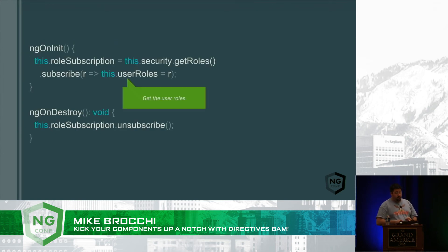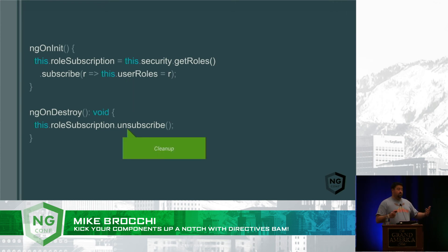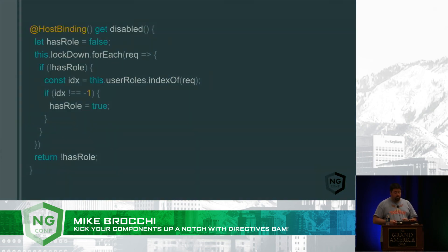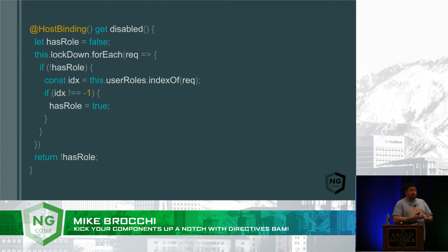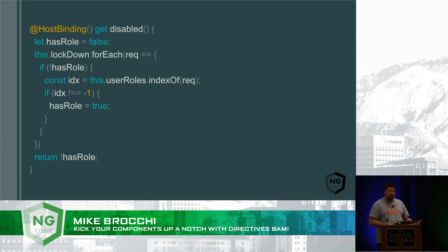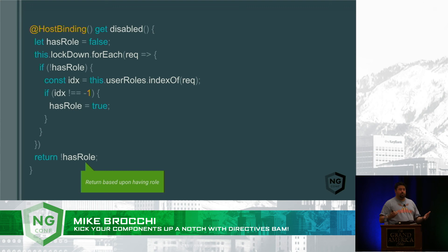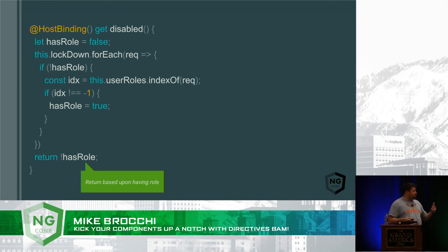I'm keeping track of a subscription to an observable and an input to pass values into it. You'll notice the selector and the input are both named lockdown — that is completely legal. You can pass values in based off of the selector that activates your directive, especially for attributes. And I'm injecting my security service via dependency injection. Inside the directive we have lifecycle hooks: on init I subscribe to get the roles from the security service and store them in a local userRoles variable. On destroy I unsubscribe to clean up memory management.